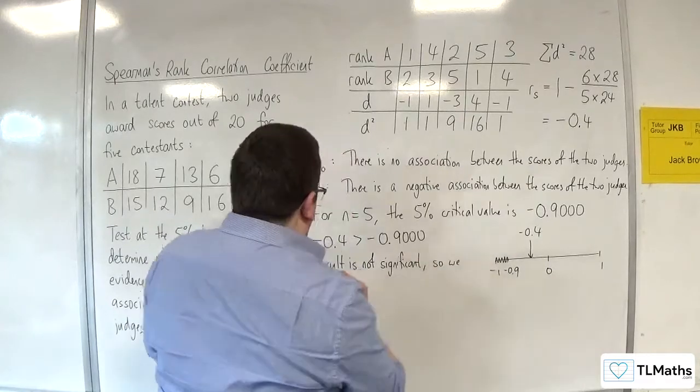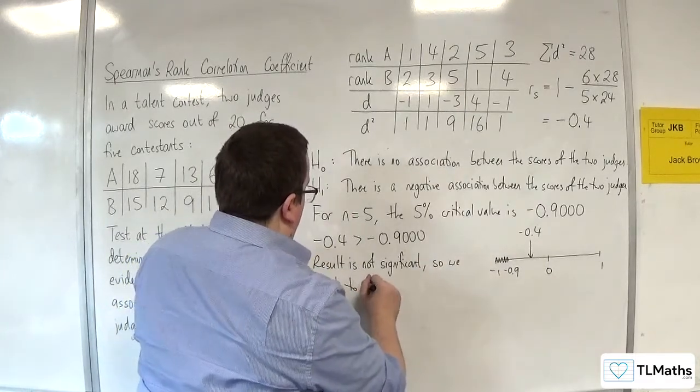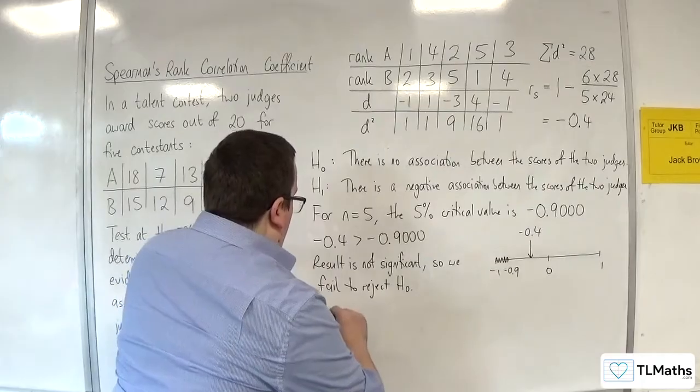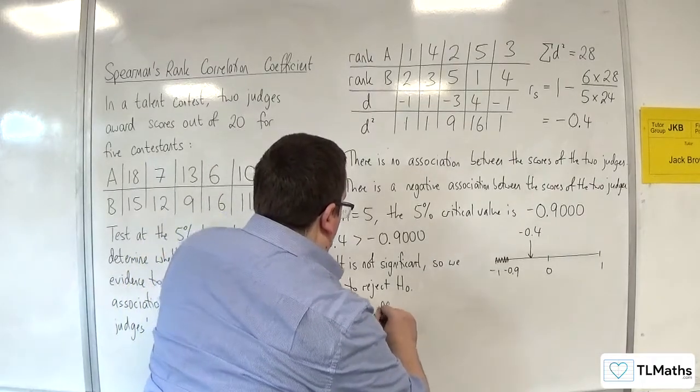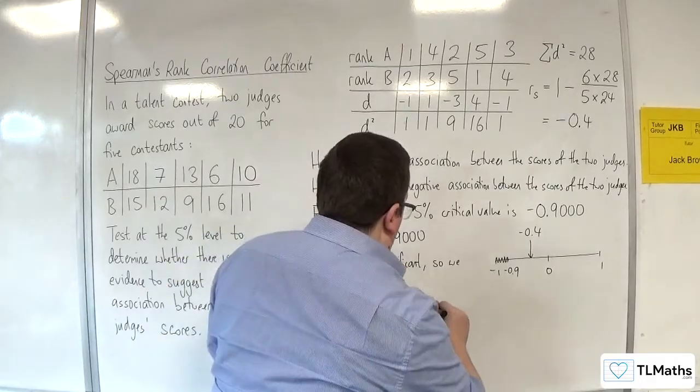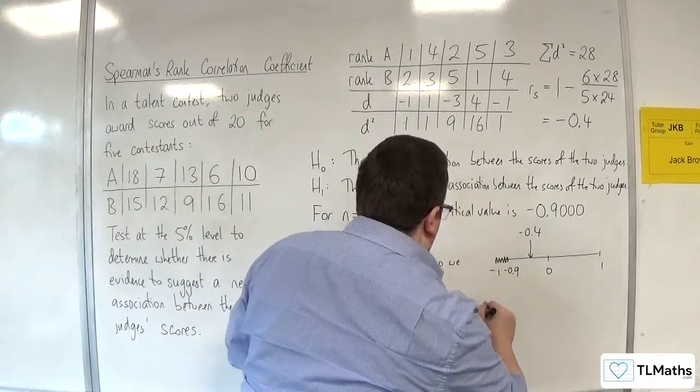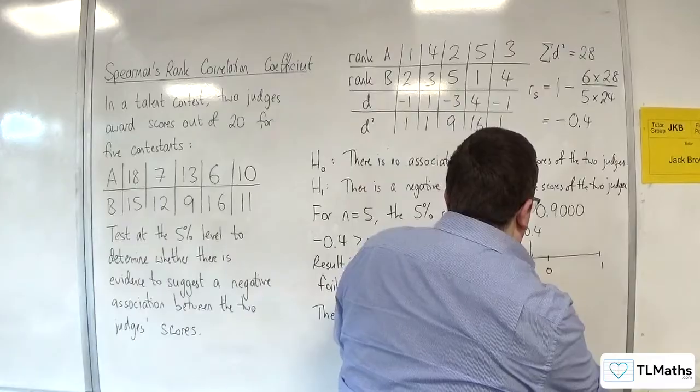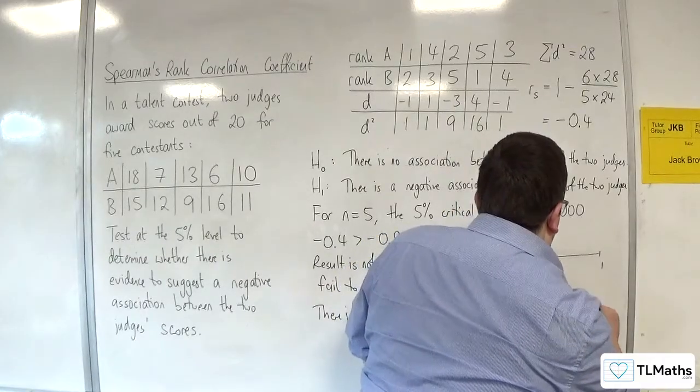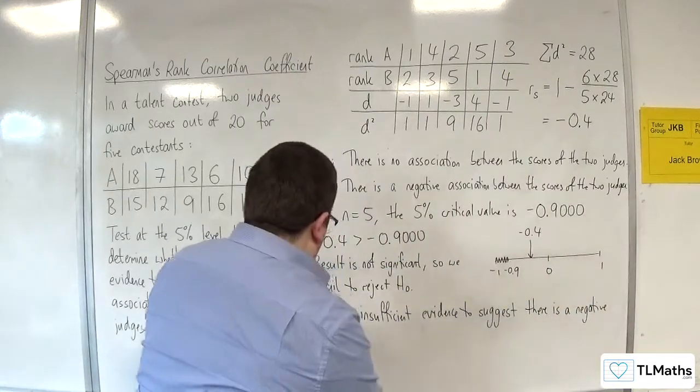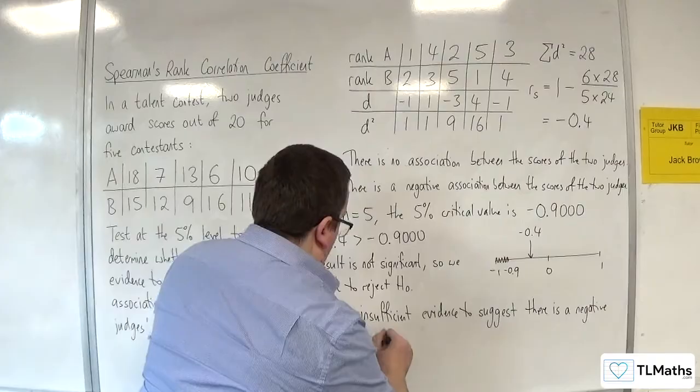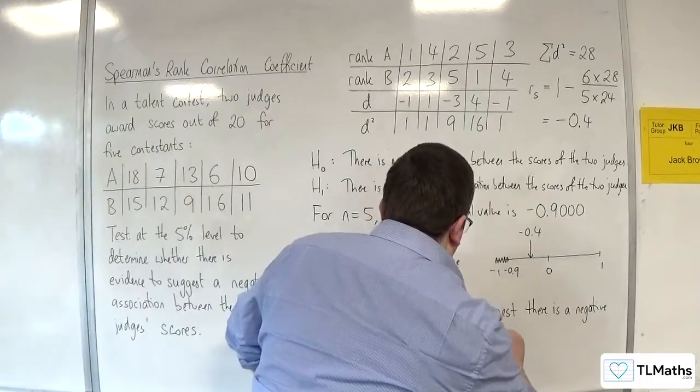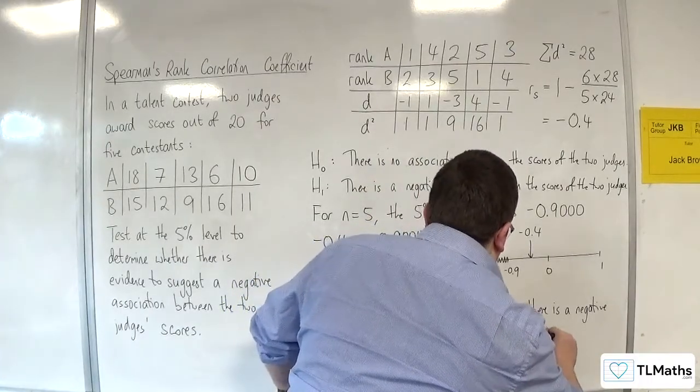So, we fail to reject H₀. We can say there is insufficient evidence to suggest. So, we want a non-committal statement here. Evidence to suggest there is a negative association between the scores of the two judges.